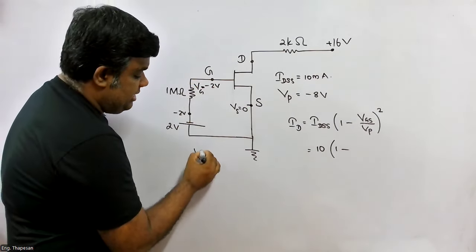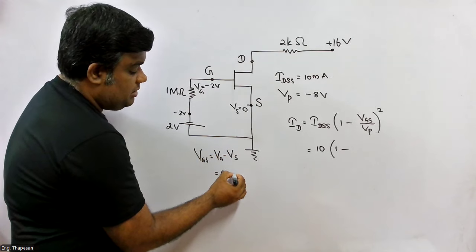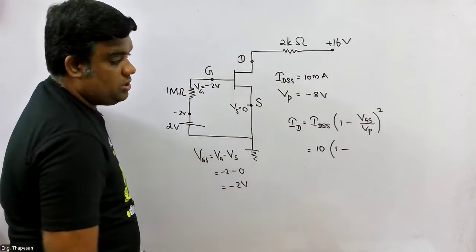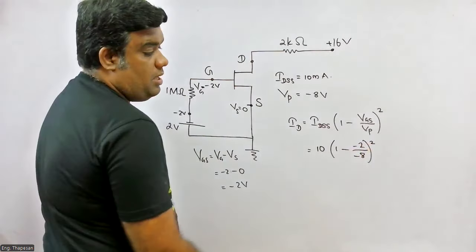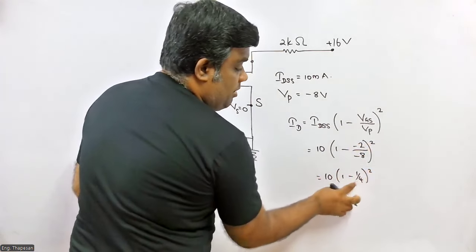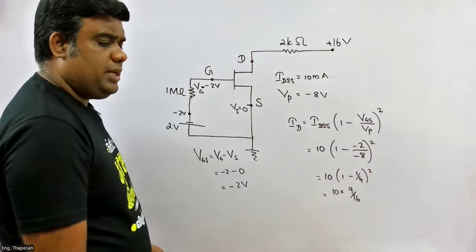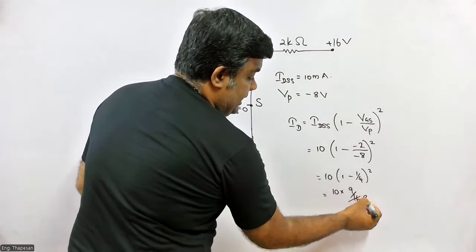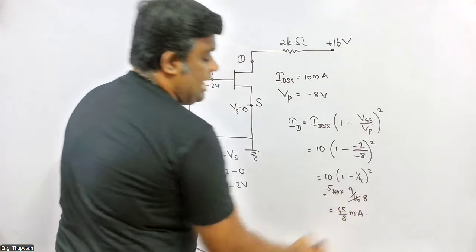What is VGS? VG minus VS. This is 0 minus? No, minus 2 minus 0. This is minus 2 voltage. Then VGS minus 2, VP minus 8, all things get. This is 4. This is minus 4. This is minus 6. This is minus 5.